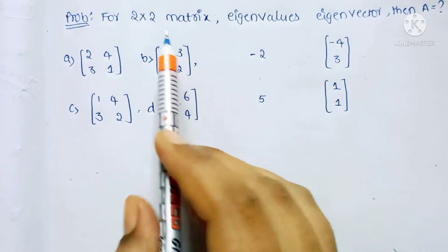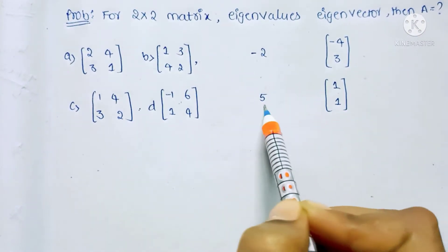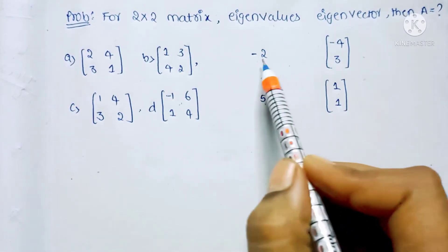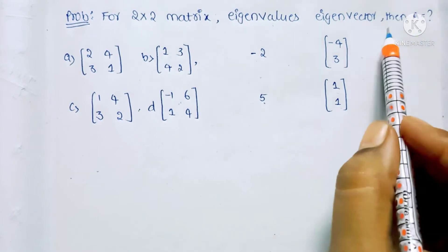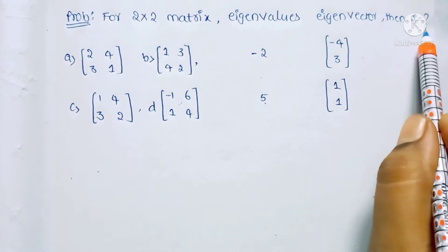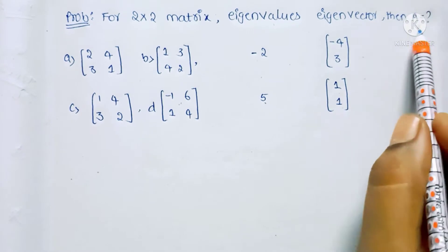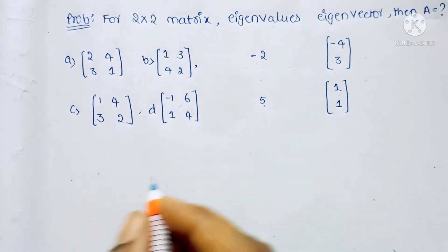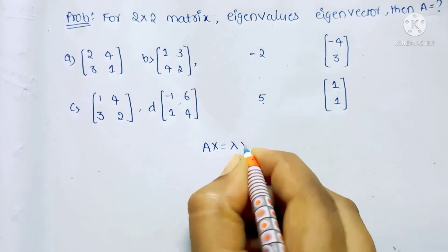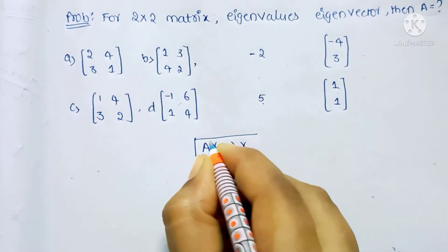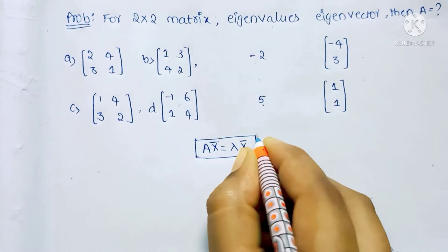Coming to the next problem: for a 2×2 matrix, the eigenvalues are -2 and 5. The eigenvector for -2 is given, and for 5 another vector is given, and we are asked to find matrix A. We use the equation Ax̄ = λx̄.